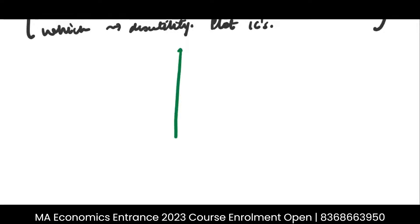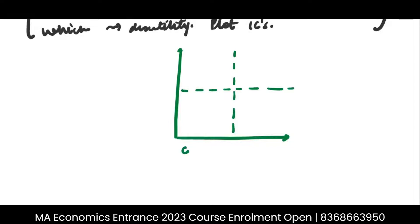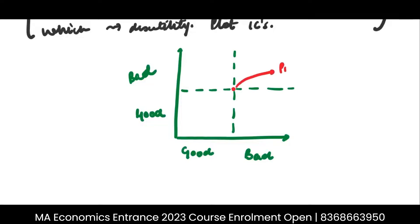Okay, let's take it together now. Consider this diagram first. Here we have a good good and a good good on both axes. Here is a bad good and here is a bad good. You would have seen this diagram before — this is the point of saturation or bliss.